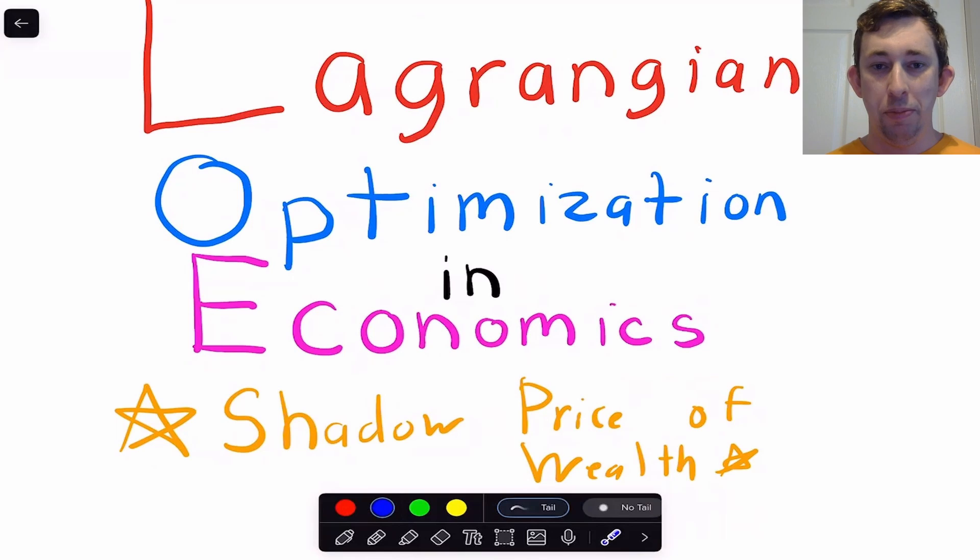In the last video, I touched very briefly about Lambda Star. I called it the shadow price of wealth, which is very specific to utility maximization context, and so I want to talk more about that today.